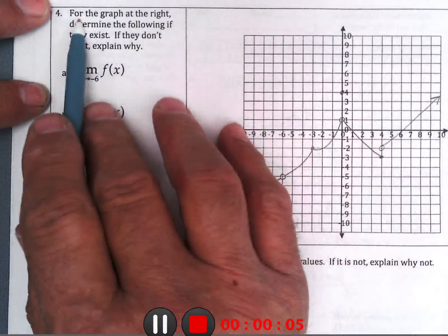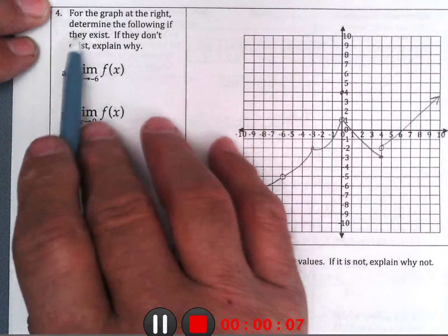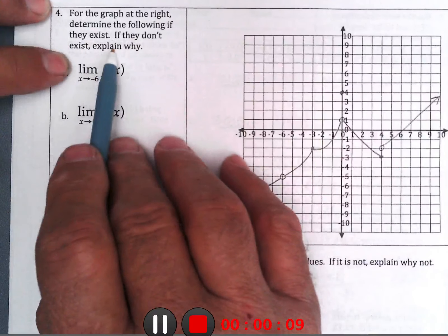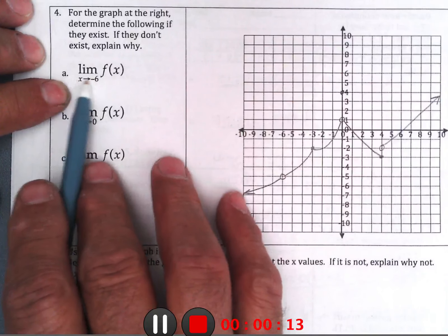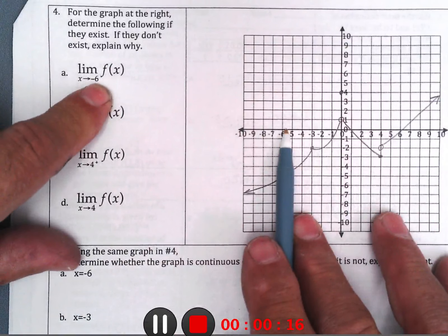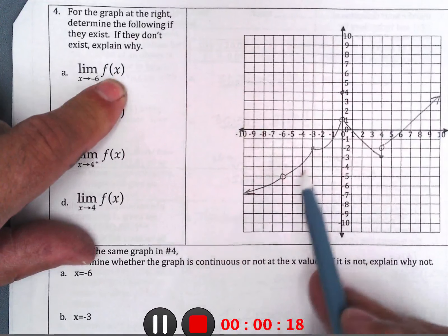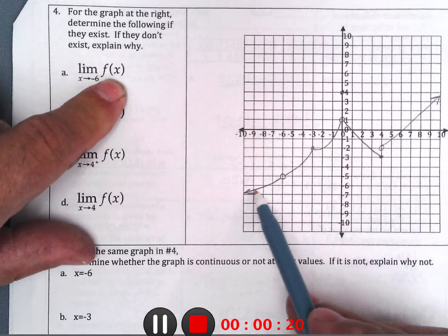For the graph at the right, determine whether the following exists. If they don't exist, explain why. So we're approaching x equals negative 6 from both sides, and what's the height to head towards? Well, if we come in from either side, we get negative 5.